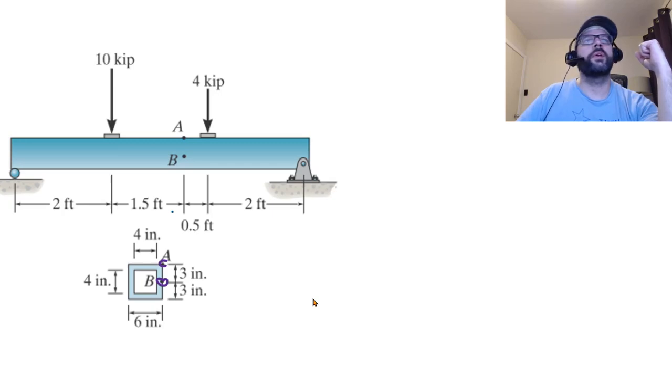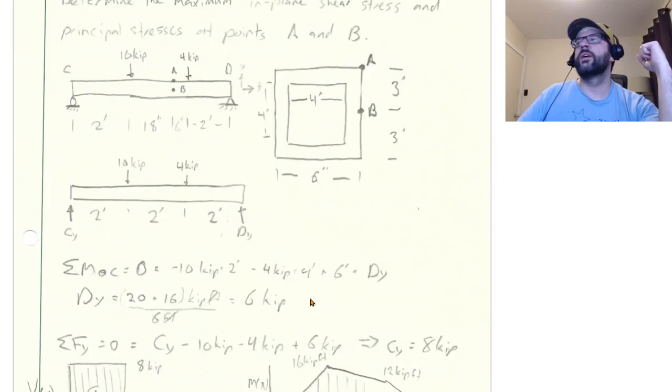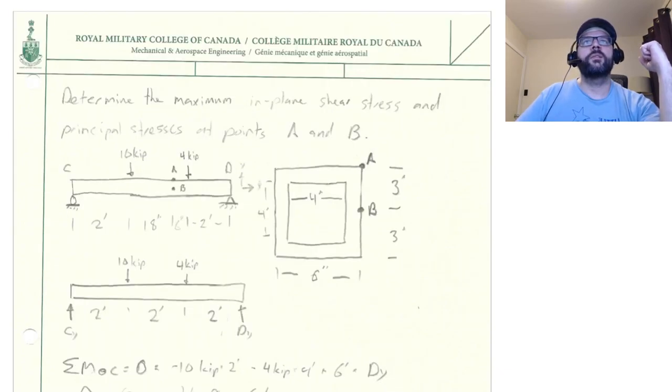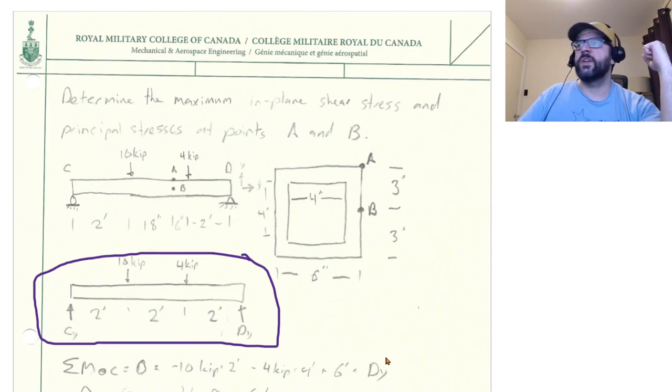So if we want to analyze this, again, there's a few things we need to do first. Finding out the reactions is obviously going to be the first thing we do, start with our static stuff. So got a free body diagram of this sucker here. We've got two unknowns. Should be easy to solve for, right?